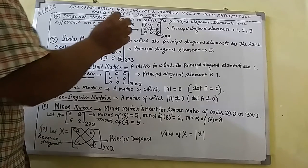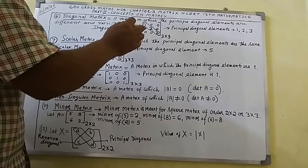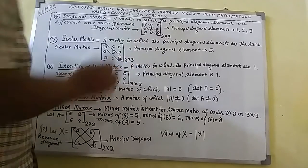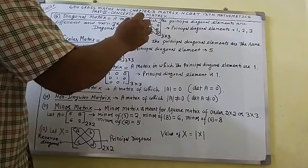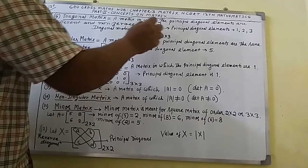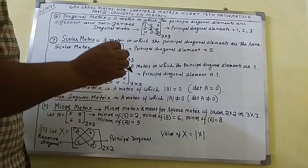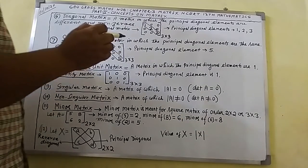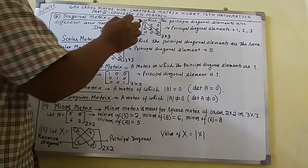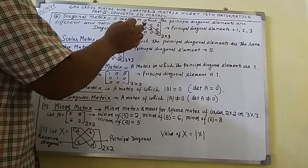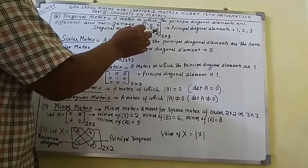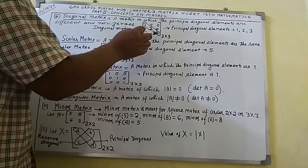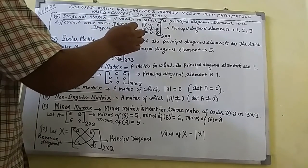Here you can see a matrix of order 3 by 3. There are 3 rows and 3 columns. The principal diagonal elements are 1, 2, and 3, which are different and non-zero. That is why this matrix is called a diagonal matrix.